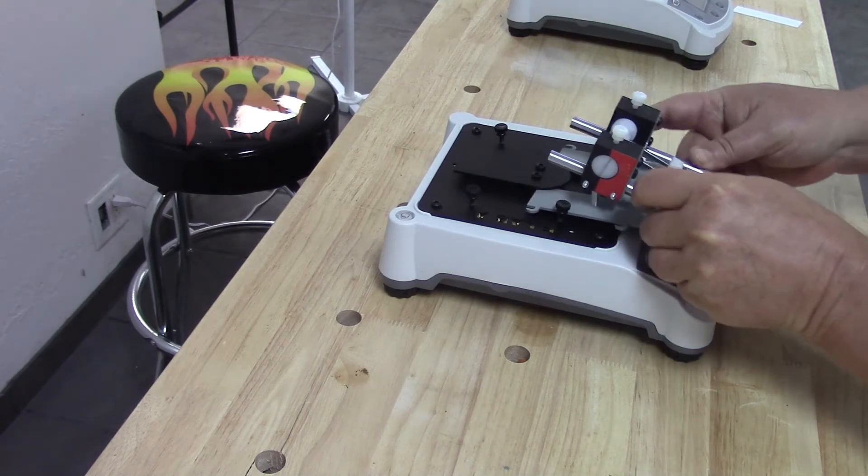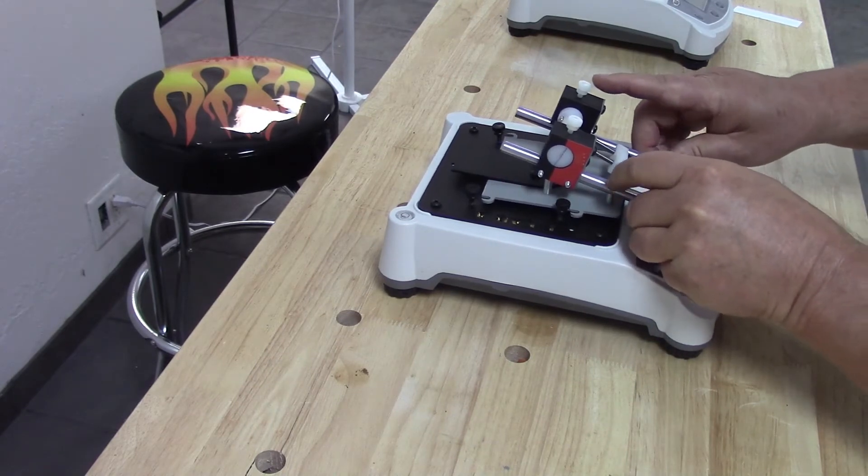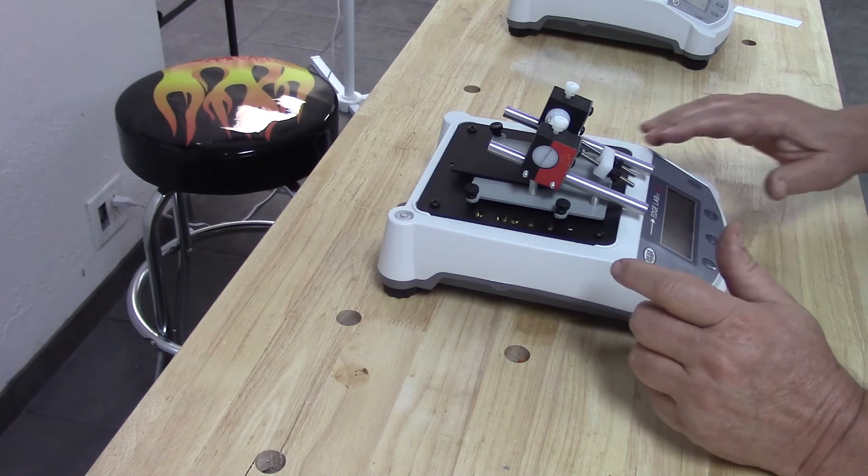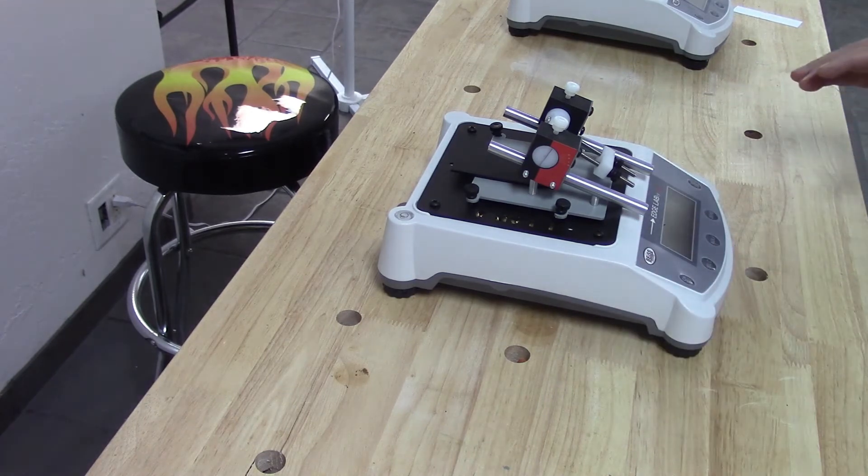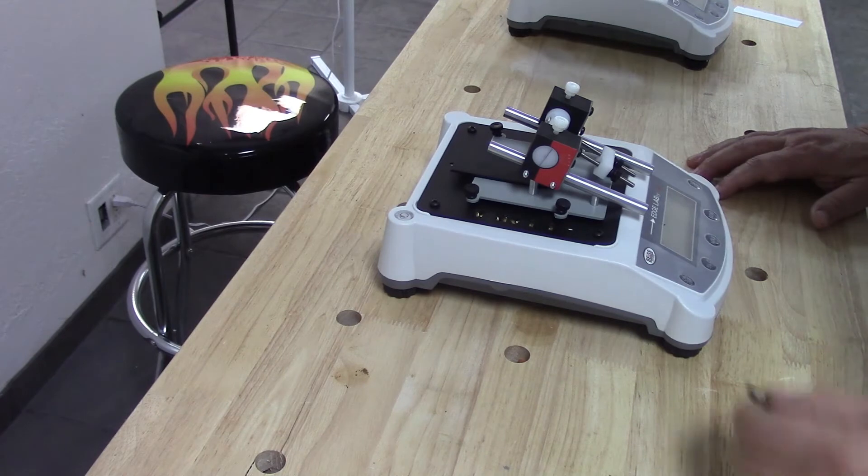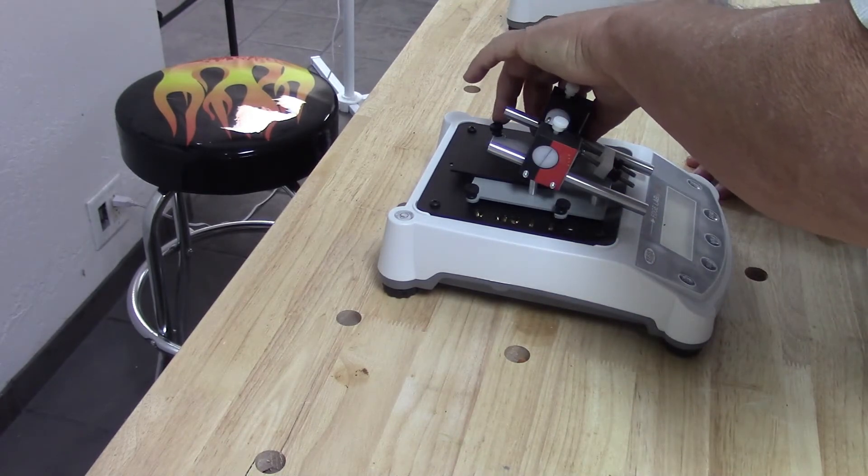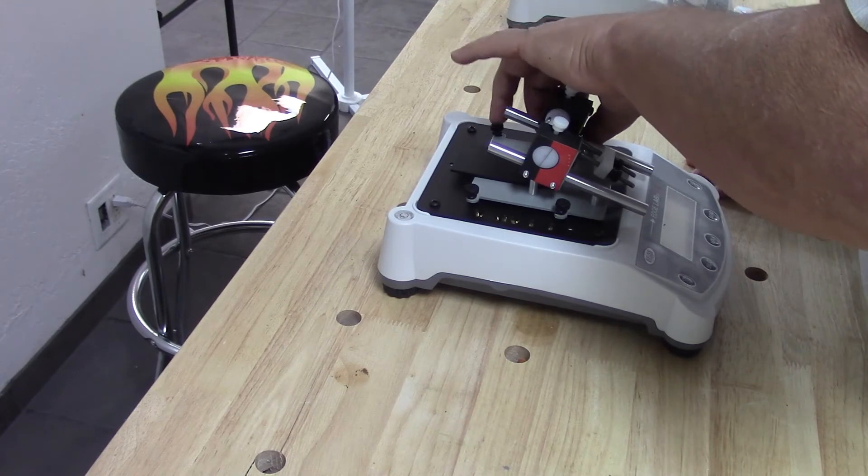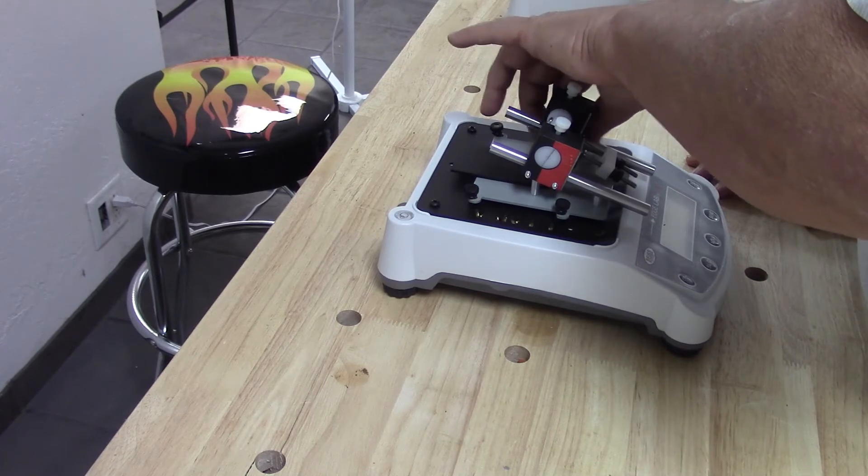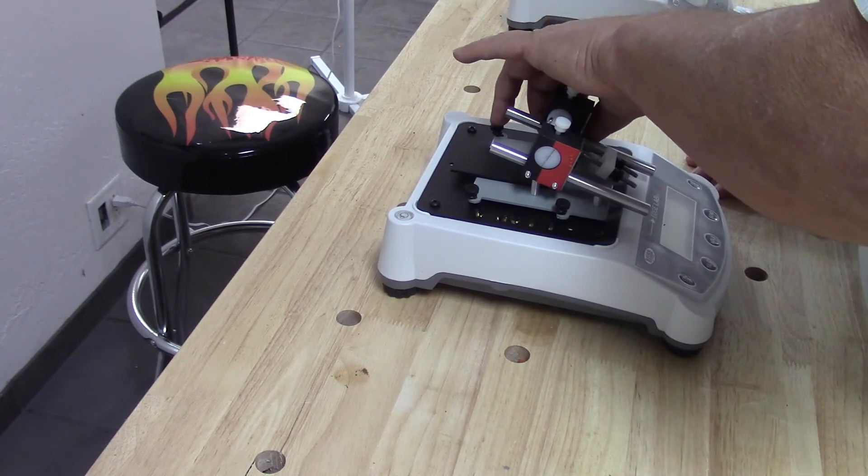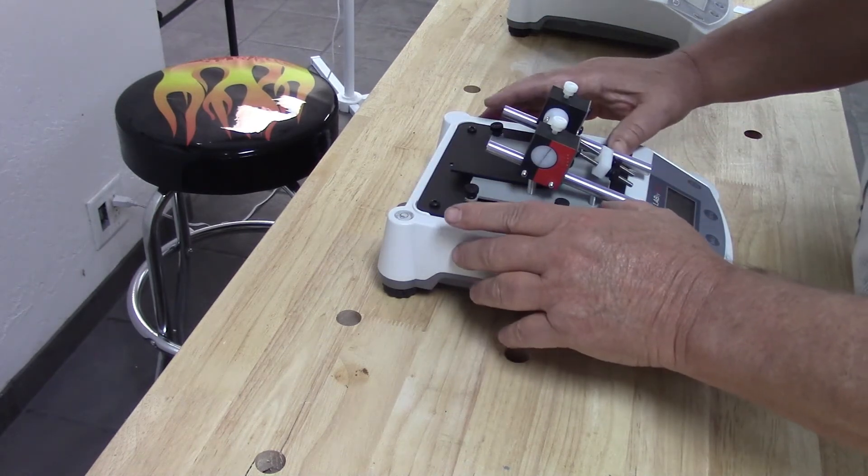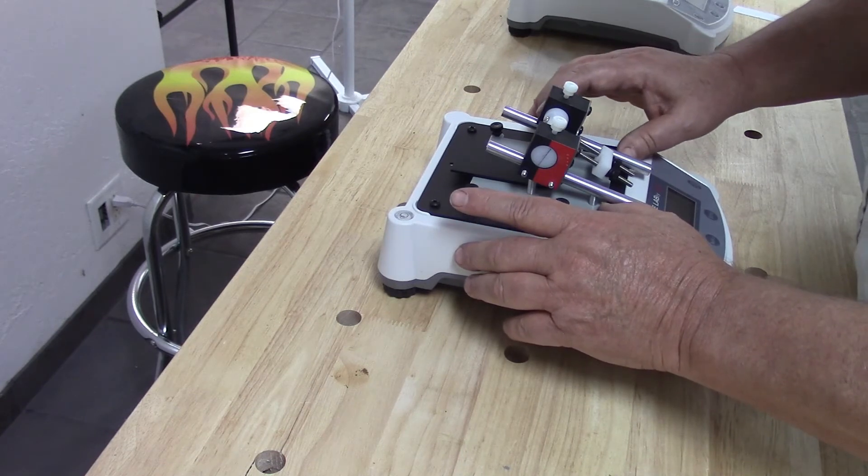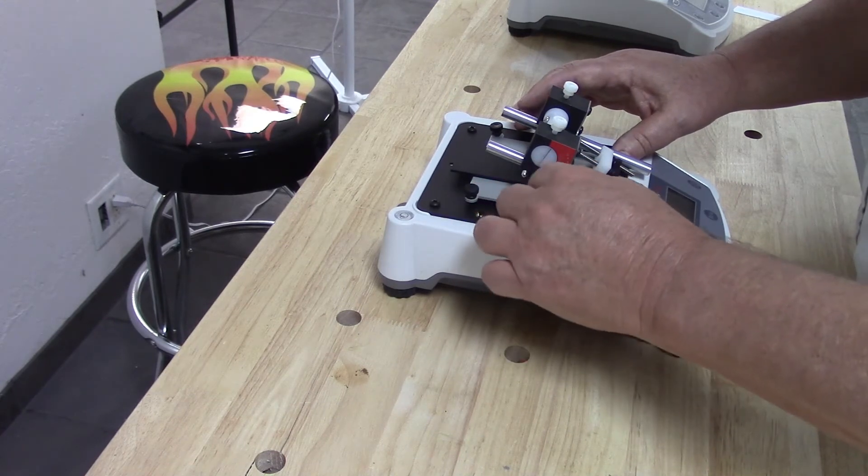Then slide it into place, hook those notches in the top, the rear two thumb screws. Then we will replace our thumb screw that we removed. Then we're going to slide it back so that we're all the way back, and then we're going to just snug these down.